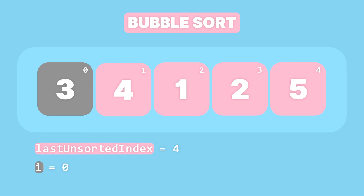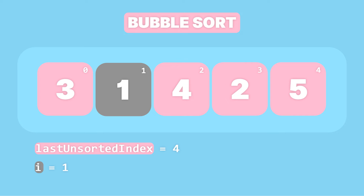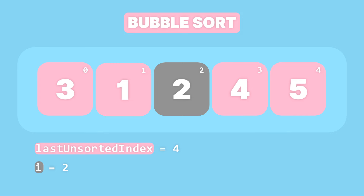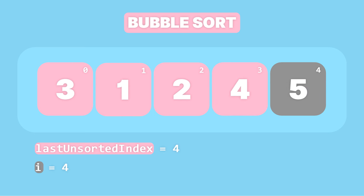In our case, 3 is less than 4, so we don't swap it. Next, we increment i to 1 and compare the element at index 1 with the element at index 2. Here, 4 is greater than 1 so we swap them. Next, we increment i to 2 and compare the element at index 2 with the element at index 3. Here, 4 is greater than 2 so we swap them. Then we increment i to 3 and compare the element at index 3 with the element at index 4. Since 4 is smaller than 5 we don't do anything, and we just increment i to 4. At this point, i is equal to the last unsorted index, so we stop.